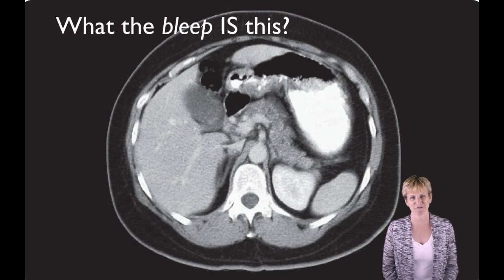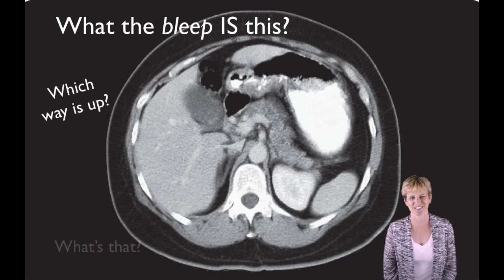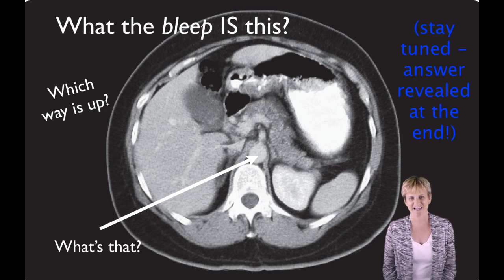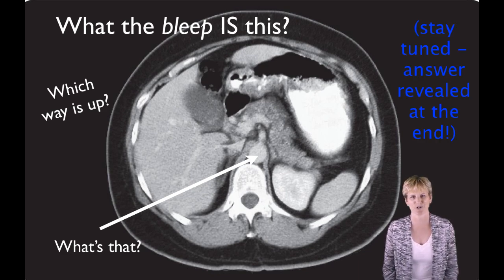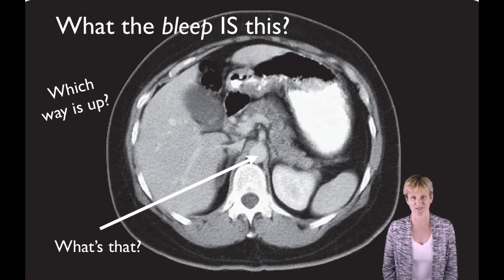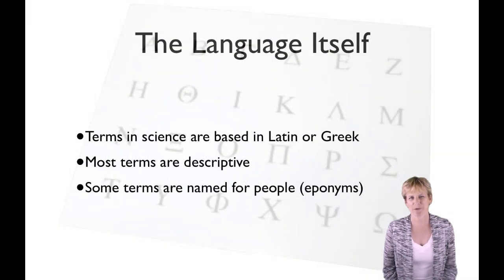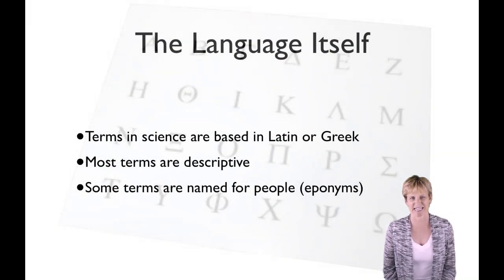You're going to find yourself in situations like this — looking at a section through the human body with absolutely no idea what it is or where you are. We're going to need these terms in order to describe what you're looking at so you can understand what you're seeing. The language of anatomy is based in Latin and Greek.